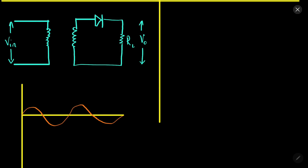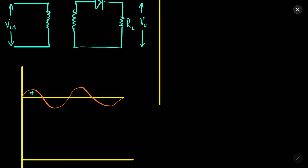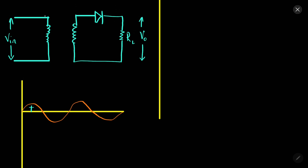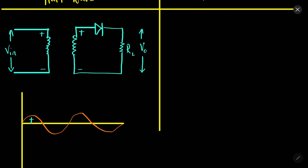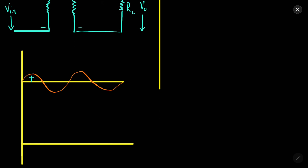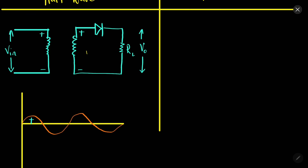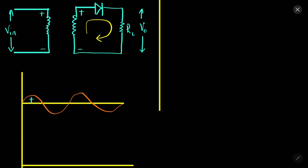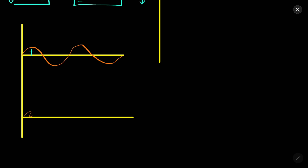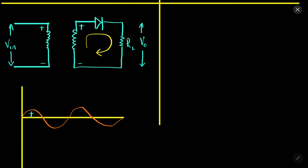Let us start with the positive cycle. In the positive cycle, this part is positive and this part is negative. Because of the principle of mutual induction, positive and negative EMF will be induced here. The p-type is connected with the positive terminal and the n-type is connected with the negative terminal, so this is forward bias, and there will be current when the diode gets the positive cycle.